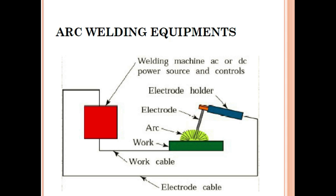In the arc welding setup, there is an AC or DC power source with controls. One cable goes to the electrode holder and another to the work. The machine has a positive and negative terminal. The electrode holder is attached to an electrode, and the arc is created at the work. This is the general fundamentals of the arc welding equipment.